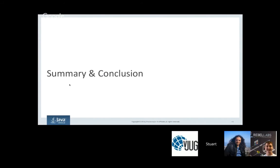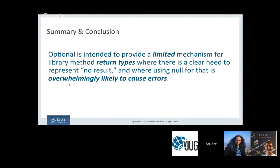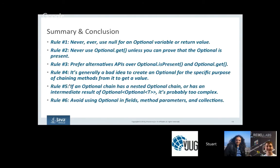Summary and conclusion: Optional is a limited mechanism for library method return types in cases where using null is overwhelmingly likely to cause errors. The rules are: never use null for an Optional reference; never call Optional.get() unless you can prove the value is present; prefer alternative APIs over isPresent and get; don't create an Optional just to chain methods; avoid nesting optional chains; and avoid Optional in fields, method parameters, and collections. Happy programming and enjoy effective use of Optional.